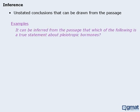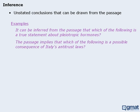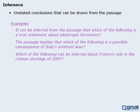It can be inferred from the passage that which of the following is a true statement about pleiotropic hormones. The passage implies that which of the following is a possible consequence of Italy's antitrust laws, and which of the following can be inferred about France's role in the cheese shortage of 2007. As you can see, these questions all require us to make logical inferences.